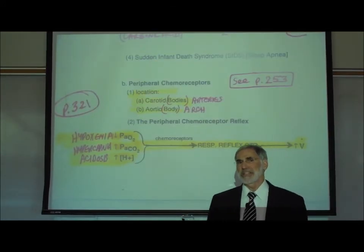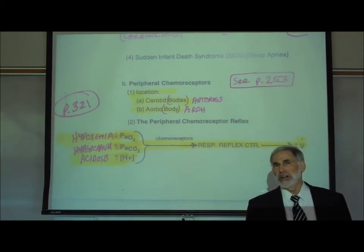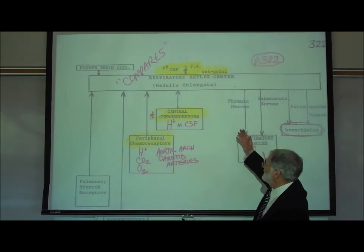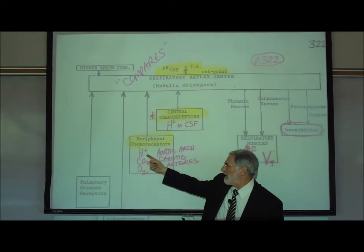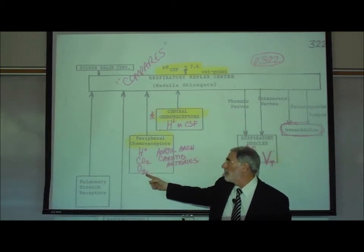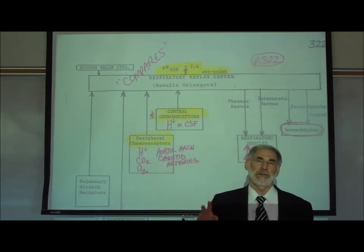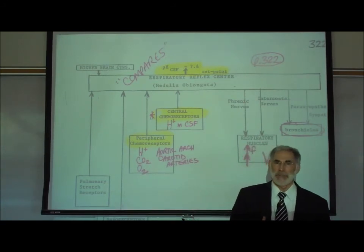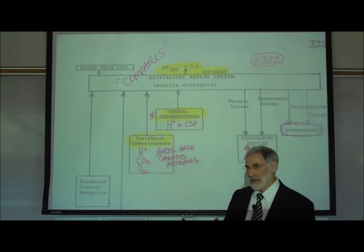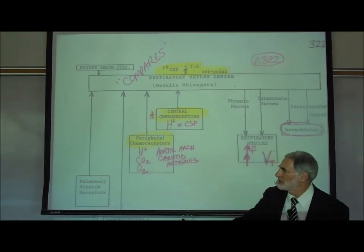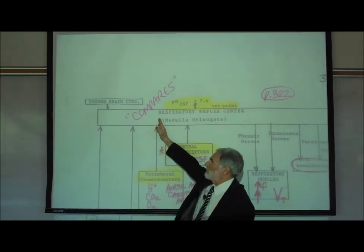In addition to the central chemoreceptors, there are also peripheral chemoreceptors. Returning to the page 322 diagram, these are sensory neurons sensitive to hydrogen ion level, carbon dioxide level, and oxygen level in the bloodstream. They are located in the aortic arch and carotid arteries — the same locations as the baroreceptors discussed during blood pressure regulation, now called the aortic and carotid chemoreceptors. They constantly monitor acidity, CO₂, and oxygen in the blood, sending that information to the respiratory reflex center.